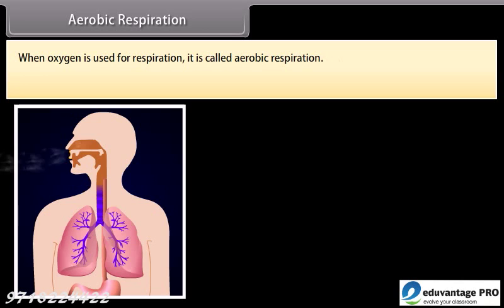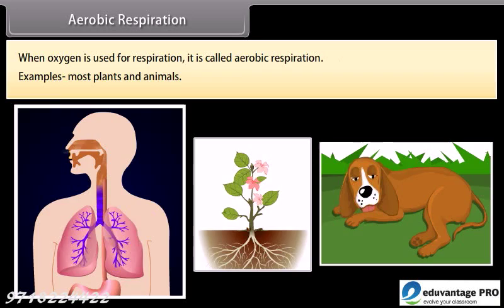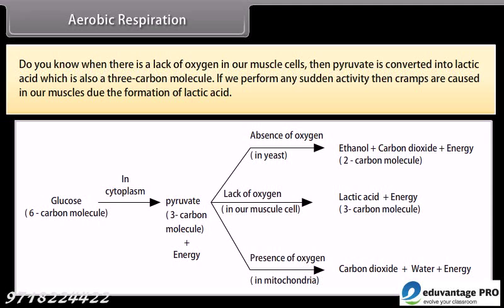When oxygen is used for respiration, it is called aerobic respiration. Examples include most plants and animals. When there is a lack of oxygen in our muscle cells, pyruvate is converted into lactic acid, which is also a 3-carbon molecule. If we perform any sudden activity, cramps are caused in our muscles due to the formation of lactic acid.